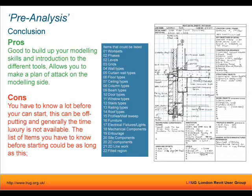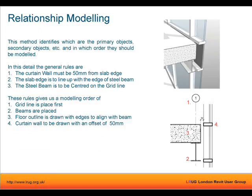One of the ways I model is relationship modeling — finding an object that sets out everything else. In this case it's just a simple detail: the grid line sets out the center of the beam, the beam sets out the edge of the floor, and the floor sets out the edge of the curtain wall. So the curtain wall is now related to the edge of the beam, not necessarily the grid line. You pick which object has priority — maybe the beam has priority, so that's the first object that goes in. Then you can trace the edge, which helps you speed up because you're not trying to figure out where the curtain wall starts.